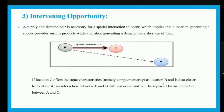Intervening opportunity means that a supply and demand pair is necessary for spatial interaction to occur. However, if location C offers the same characteristics — mainly complementarity — as location B, and is also closer to A, then the interaction between A and B will not occur and will be replaced by an interaction between A and C. Since C is nearer to A and provides the surplus that A requires, interaction between A and C will take place instead of A and B.